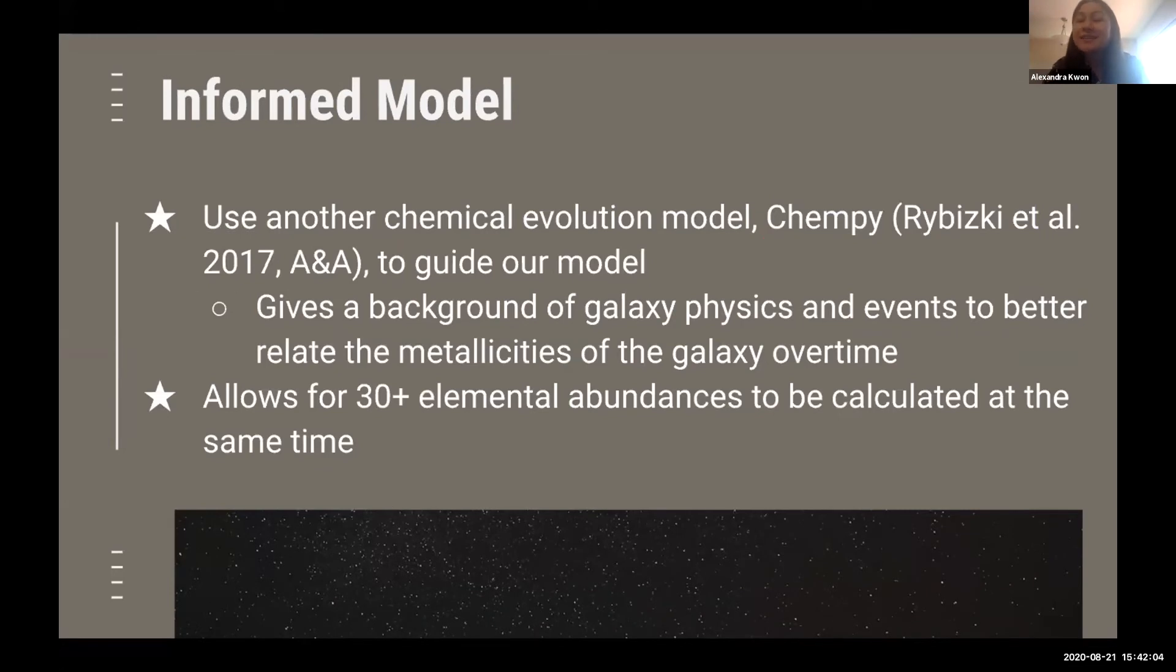In our informed model, we use an existing chemical evolution model called CHEMPI. What CHEMPI does is it takes in galaxy parameters and runs a bunch of models based on stellar and star formation physics to produce predicted abundances. The galaxy parameters it takes in are things like how much of each element each star yields when it explodes, how much gas within the galaxy actually goes into star formation, how long it takes for a star to explode, and many other parameters that affect the final galaxy abundances. An interesting thing about CHEMPI is it actually allows us to calculate the abundances for 30 plus elements at a time, which opens the door to exploring the chemical evolution of more elements than we were from the first model.